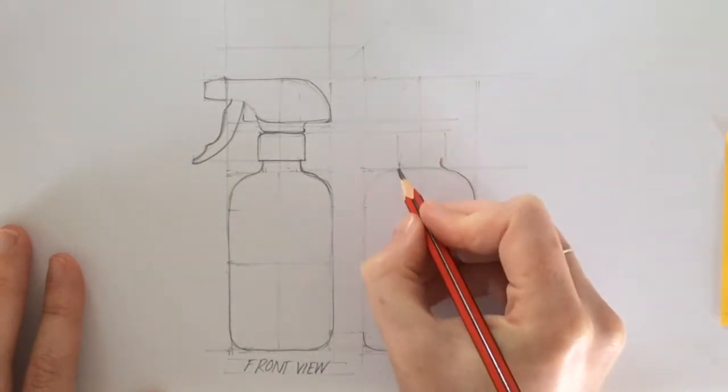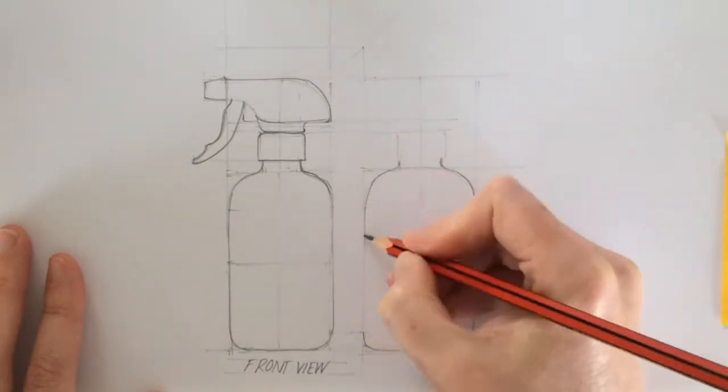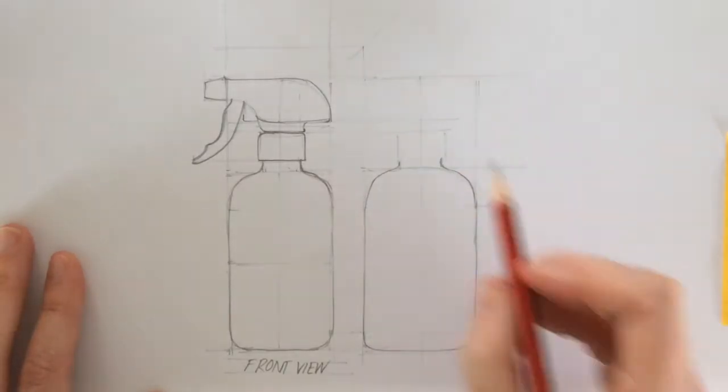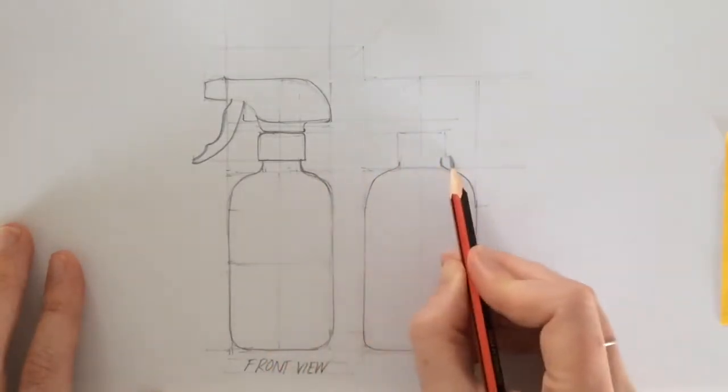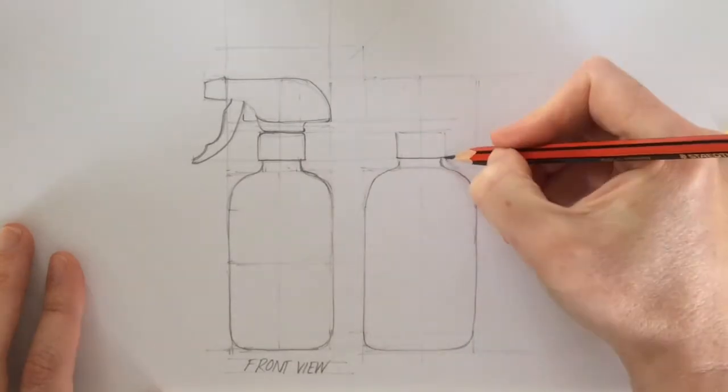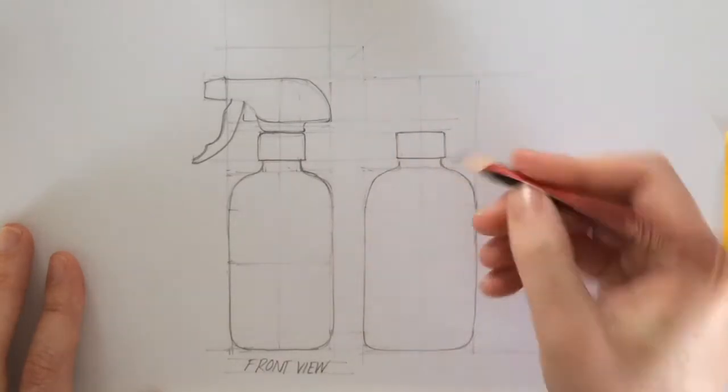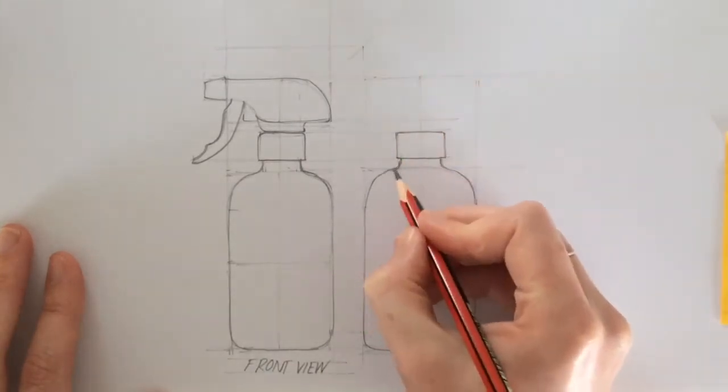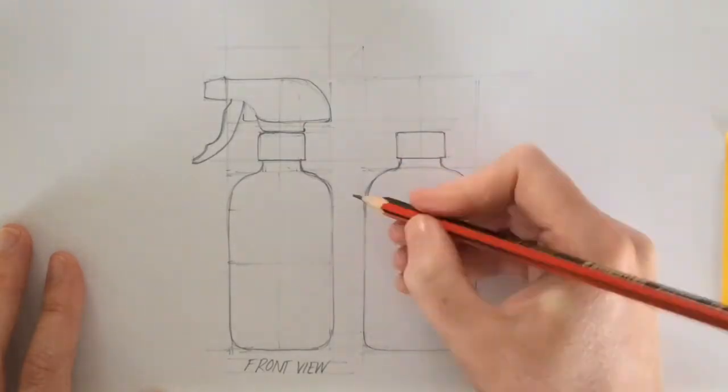Once I'm happy with elements, I can darken them in, especially because I've got that reference of essentially the same view, because the bottom of that bottle doesn't change in its proportions or details from the front to the side.